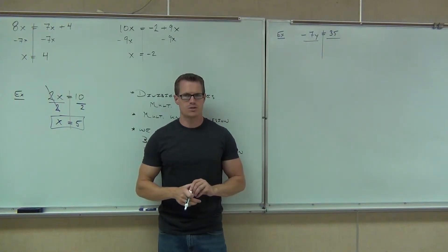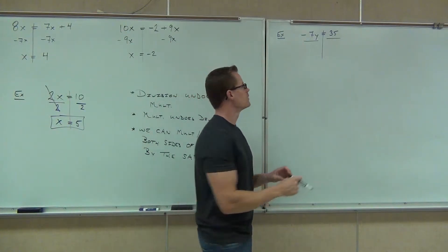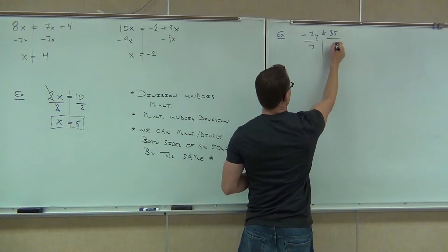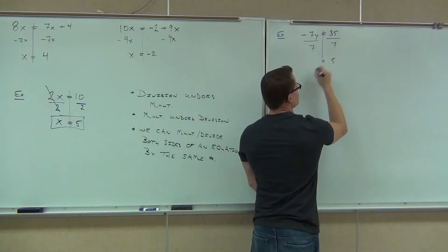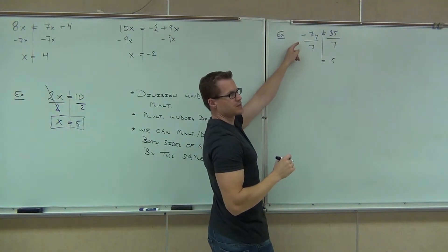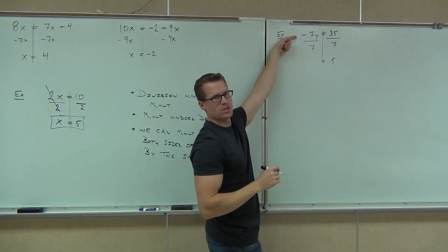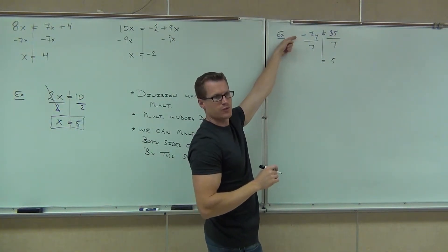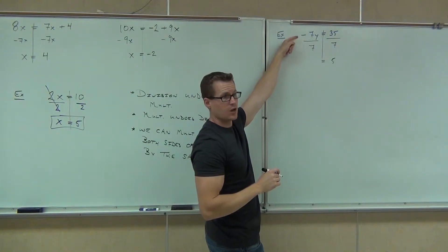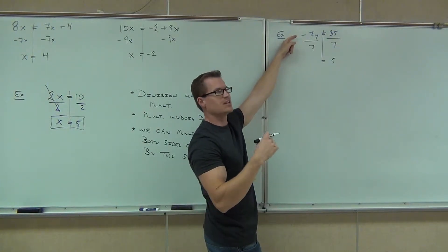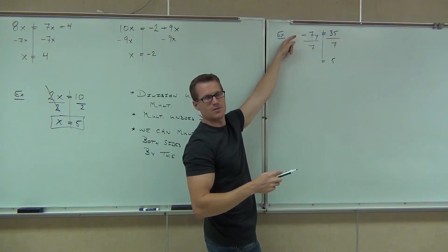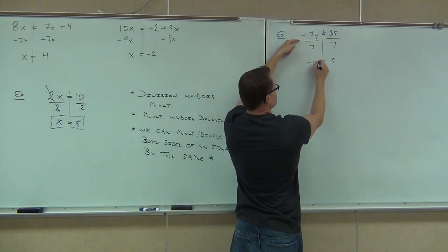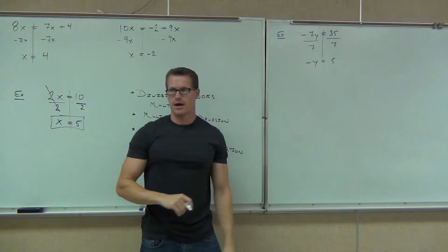Let's see what would happen — I want you to notice this. We're going to try positive 7. Please watch on the board. If you tried positive 7, you'd sure enough get 5 over here. But look at this: is there anything that's going to eliminate that negative? No. So if you divide by positive 7, that negative doesn't just magically disappear. You're not Harry Potter with your math wand. You'd actually get negative y out of that.